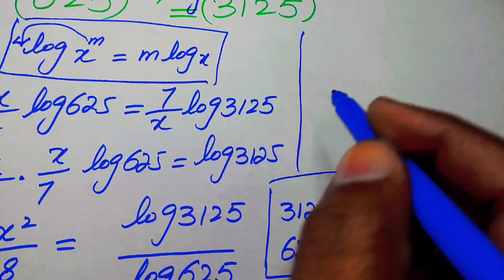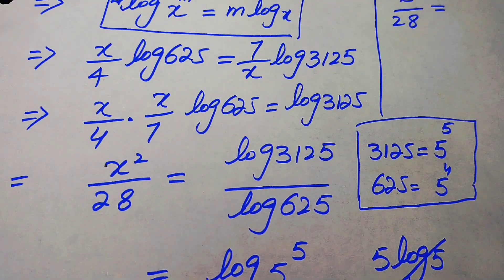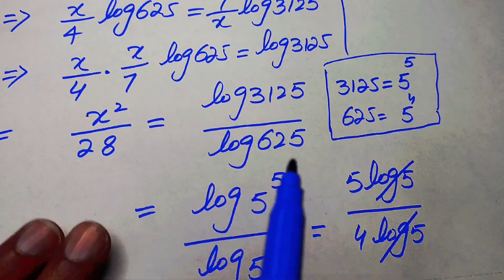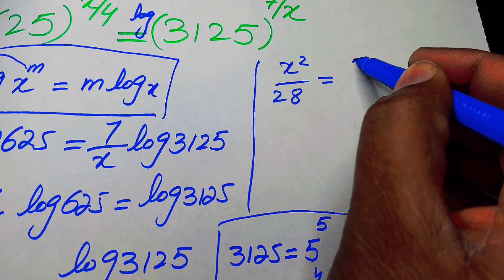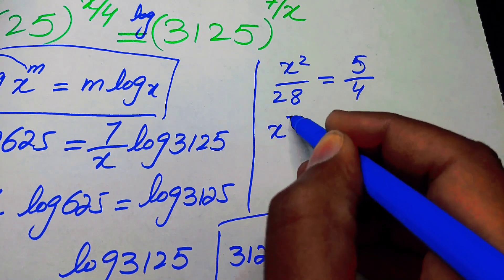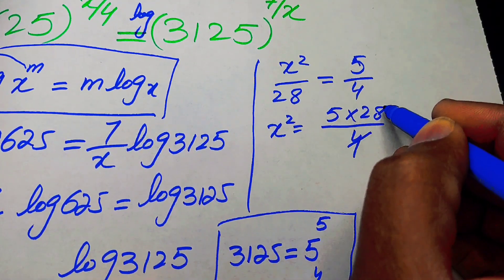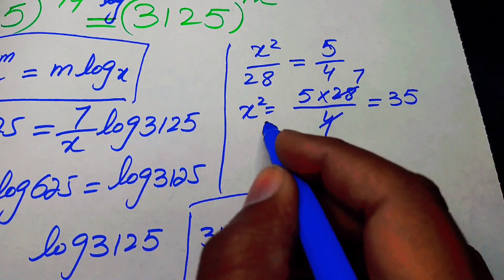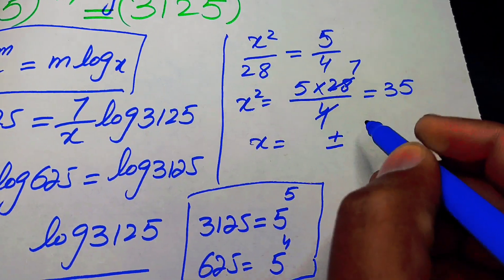So we have x squared over 28 equals 5 over 4. Taking 28 to the right-hand side gives 5 times 28 over 4. Since 4 sevens are 28, and 7 fives are 35, x squared equals 35.